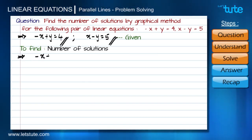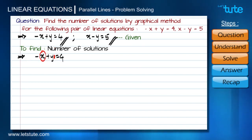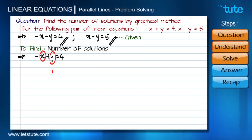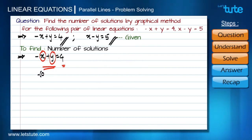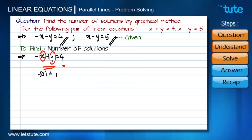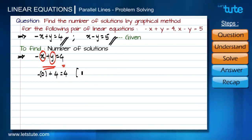Step number two: let's start with the first equation, -x + y = 4. For drawing a graph for this equation we require minimum two sets of values for x and y, and those values should satisfy the equation. Let's start with x = 0. The minus sign will have no effect on 0, so y has to be 4 to give the right hand side as 4. So the first set of values is x = 0, y = 4.